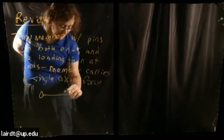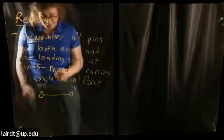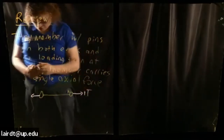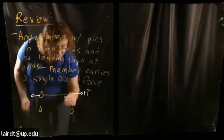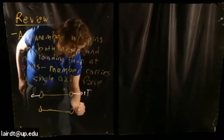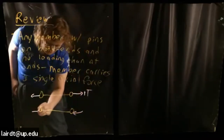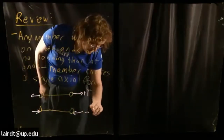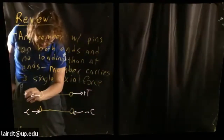As a reminder, when you have a member with pins on both ends, it will only be able to carry either a single force in positive tension, or the opposite, which would be compression — negative for our sign convention. So negative compression, positive tension.